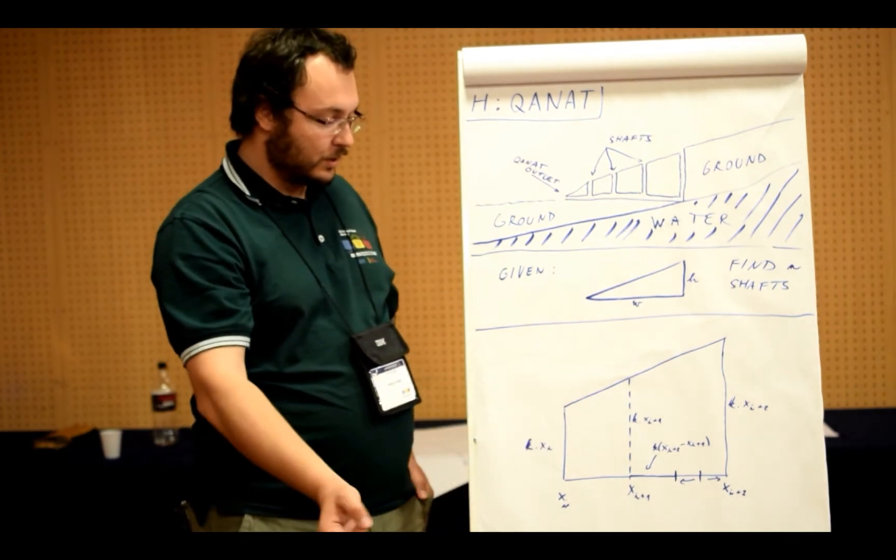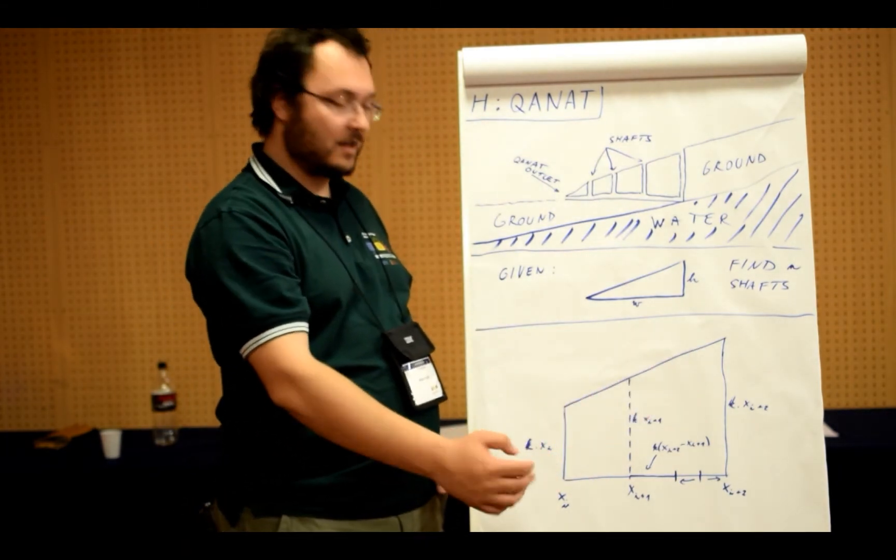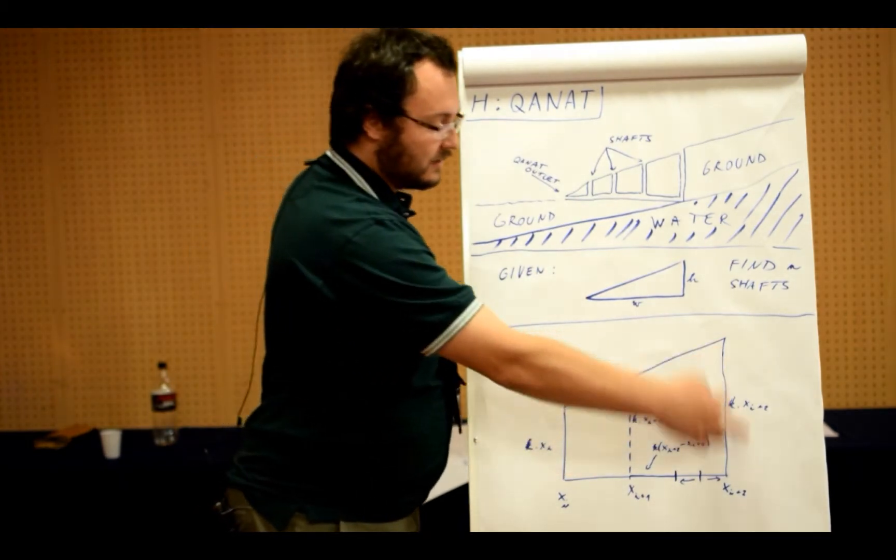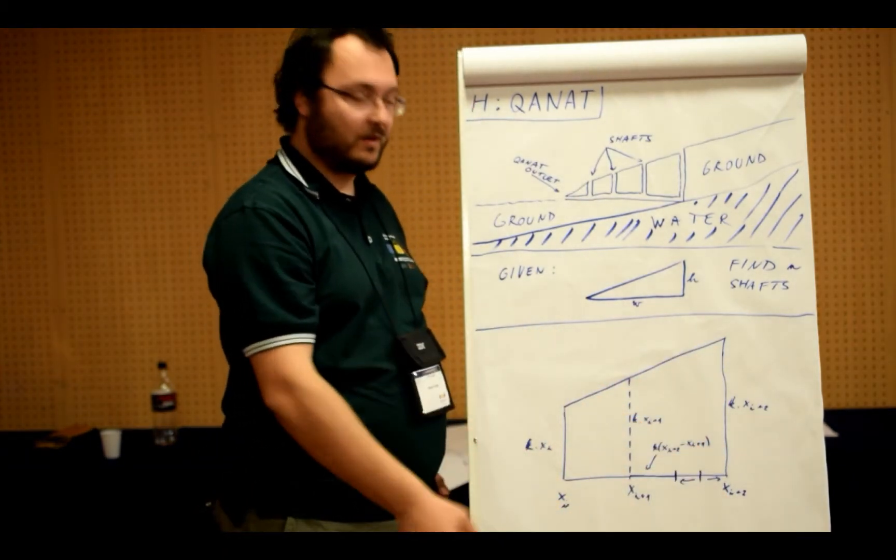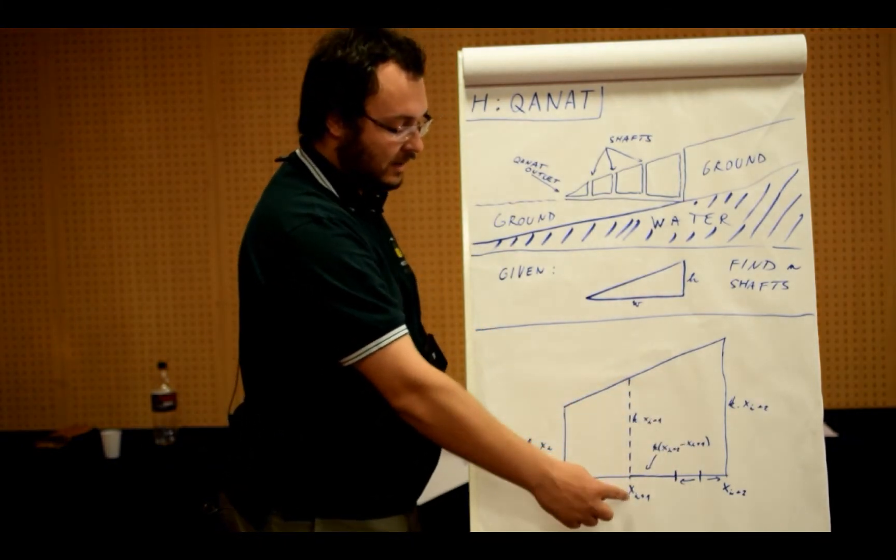So here is what you do to solve this problem. Imagine the situation with three consecutive shafts. One of them is here, one of them is there. We will for now assume that these two locations are fixed and now we are looking for the location of the third one in between them.